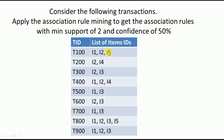The objective of this example is to find the set of rules where the minimum support is 2 and the confidence is 50%. That is the main objective of this particular problem.